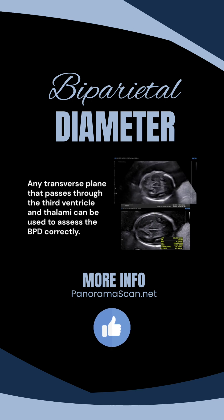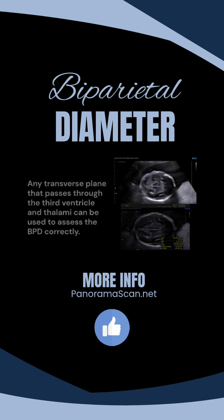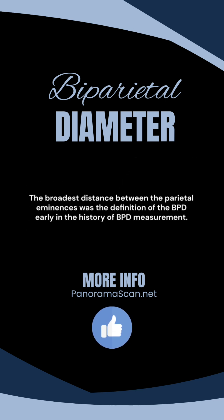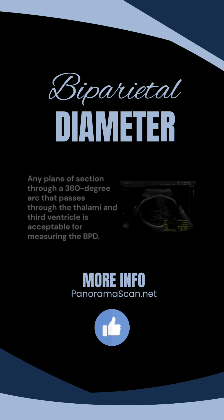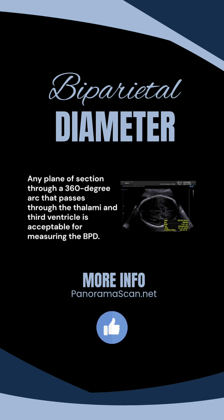Any transverse plane that passes through the third ventricle and thalami can be used to assess the biparietal diameter correctly. The broadest distance between the parietal eminences was the definition of the BPD early in the history of BPD measurement. For the purpose of measuring the BPD, any plane of section that forms a 360-degree arc and passes through the third ventricle and thalami is acceptable.